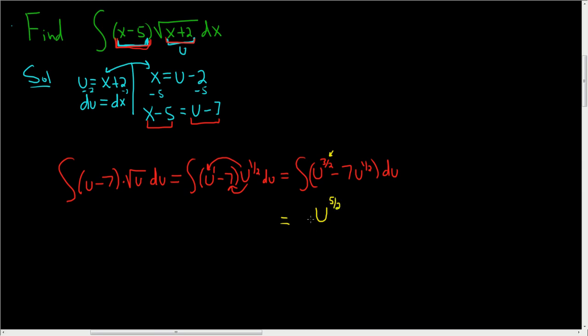And when you divide by 5 halves, you really multiply by 2 fifths. Minus 7 u to the 3 halves. And when you divide by 3 halves, you really multiply by 2 over 3 plus our constant.